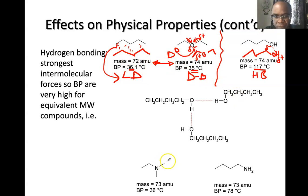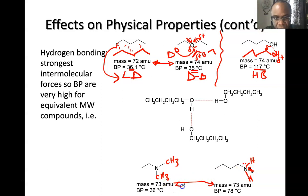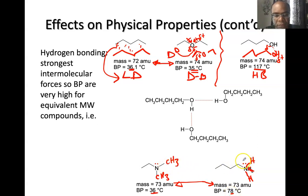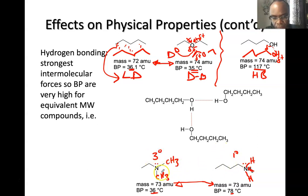Hydrogen bonding is expected on structures containing OH groups — the oxygen is partially negative and the hydrogen is partially positive. Hydrogen bonding structures have a higher boiling point than those with only London dispersion or dipole-dipole forces. Comparing two amine isomers with the same molecular formula: the highly branched one has a boiling point of 36°C while the unbranched one has a boiling point of 78°C. The tertiary amine is highly branched and has the lower boiling point; the primary amine is not branched and has the higher boiling point. Shape matters and goes with branching.